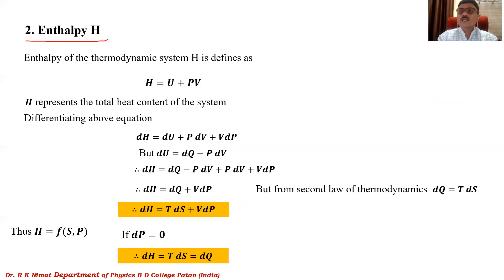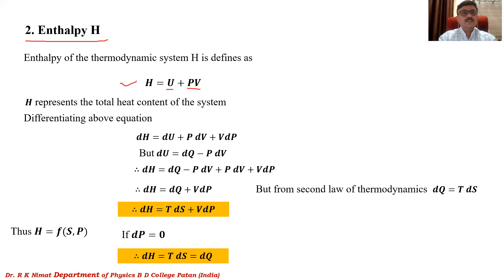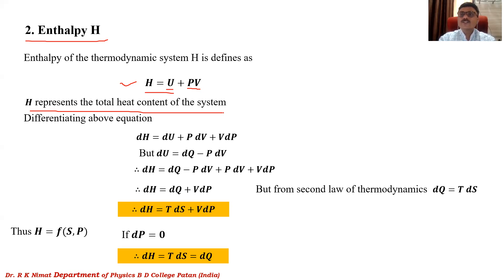The second thermodynamic potential or thermodynamic function is enthalpy, denoted H. The enthalpy of a thermodynamic system is defined as the sum of internal energy and the product of pressure and volume: H = U + PV. This function was named by the scientist Kamerlingh Onnes, who also discovered the superconductivity phenomenon. Enthalpy H represents the total heat content of the system.